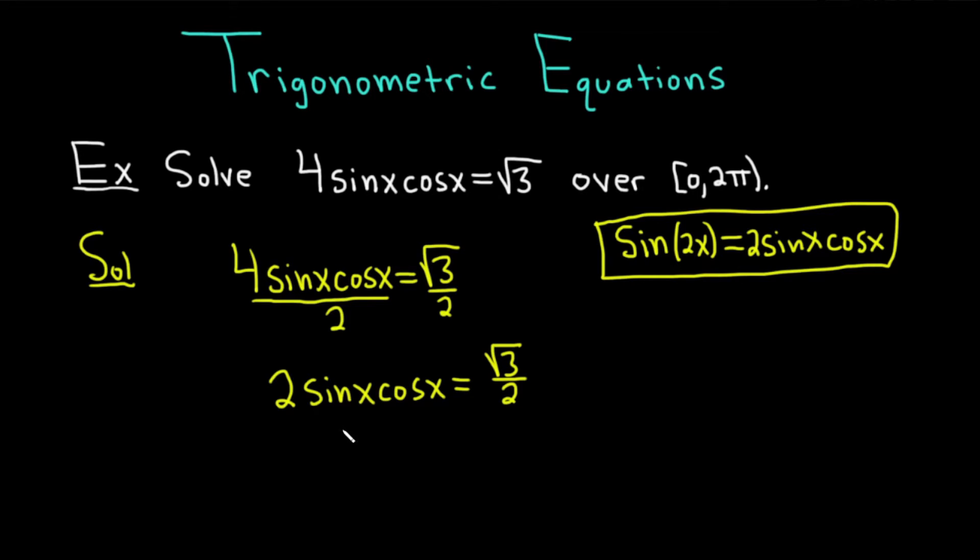And now we have exactly what we want, right? Because we have 2sin(x)cos(x), so we know that's the sine of 2x. So this is sin(2x) equals the square root of 3 over 2. So that was a little bit tricky because you had to be aware of the identity. But now there's something even more delicate that happens. So we're solving over the interval 0 to 2π. However, there is another step you have to take because there is a 2x here.